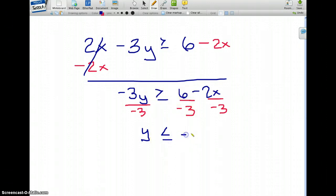And then 6 divided by negative 3, that will give you negative 2. Negative divided by negative is positive. And 2x over 3 is really 2 third x. Now I'm ready to graph this inequality.